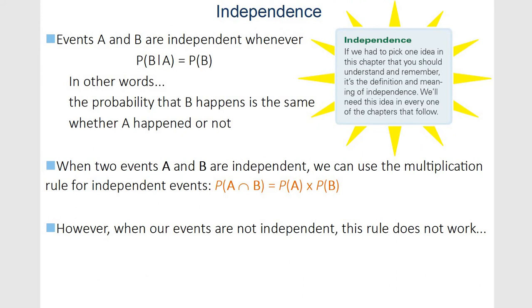Independence is super important to understand. What it's saying is that one event doesn't affect the outcome of another. The probability of B occurring given that A has happened is still the probability of B — A didn't affect B. What's the probability that I roll a 7 given that I flipped a coin and got heads? It doesn't change. If we have independence, then we can use the multiplication rule. The probability of A and B happening means I can just do probability of A times the probability of B. Super simple. Only works if they're independent.